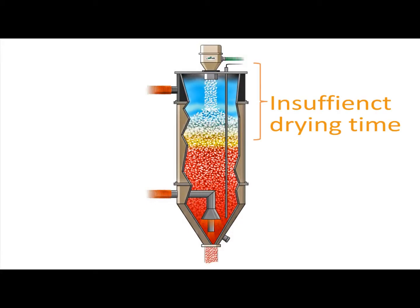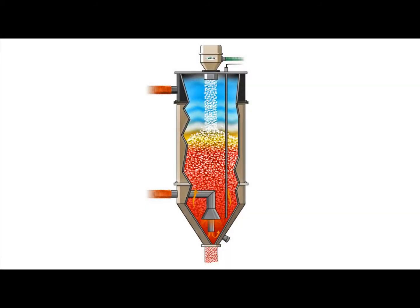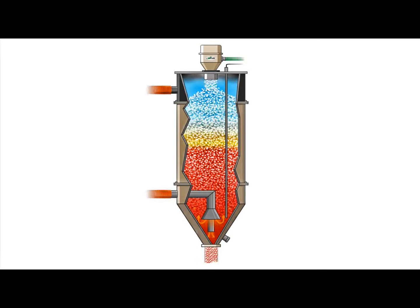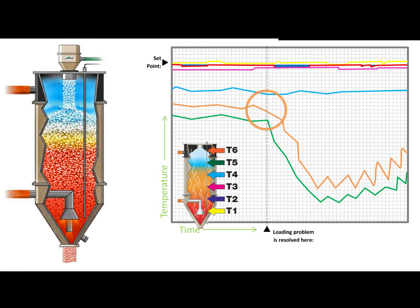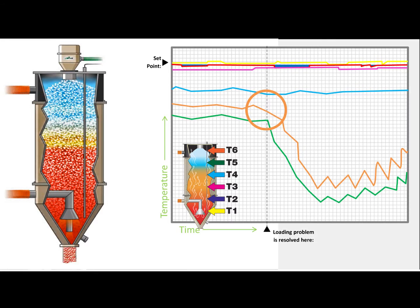An interesting, readily identifiable pattern occurs when loading is restored and new material is once again supplied to the hopper. T5 and T6 will initially drop in temperature from exposure to the new, colder material coming into the hopper.